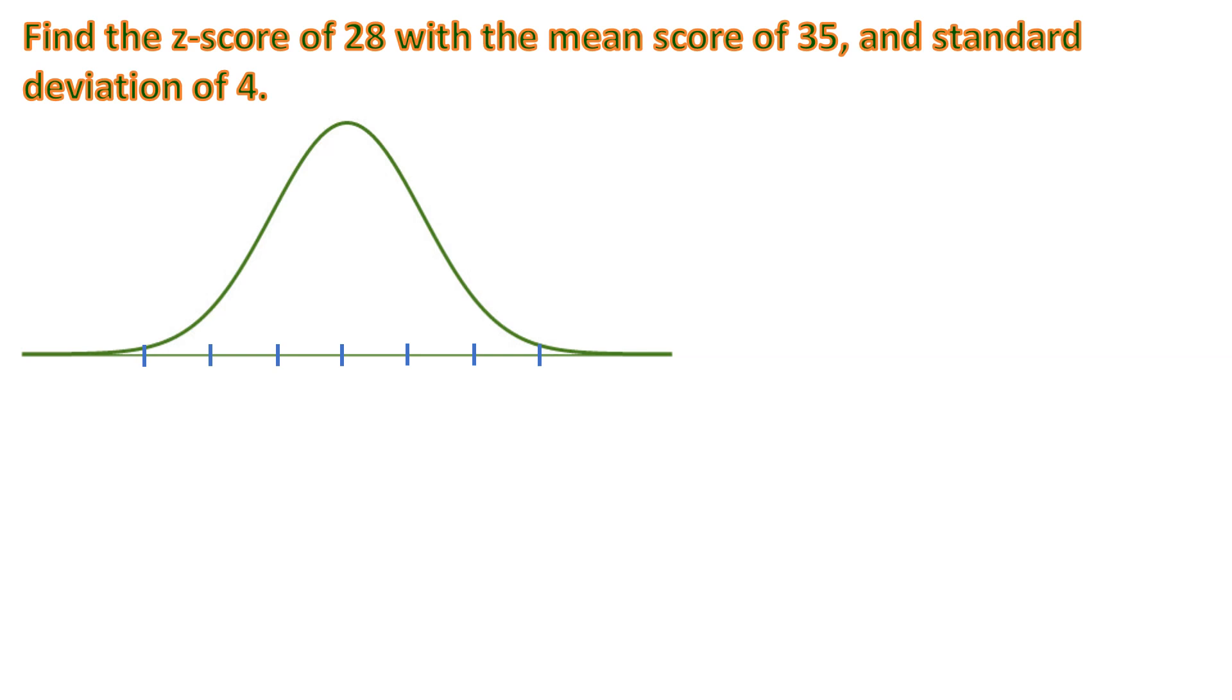So these are z-scores where the middle one is 0. On the right side are positive numbers: positive 1, positive 2, positive 3. But of course, there are numbers in between them. And on the left side are negative numbers: negative 1, negative 2, and negative 3.